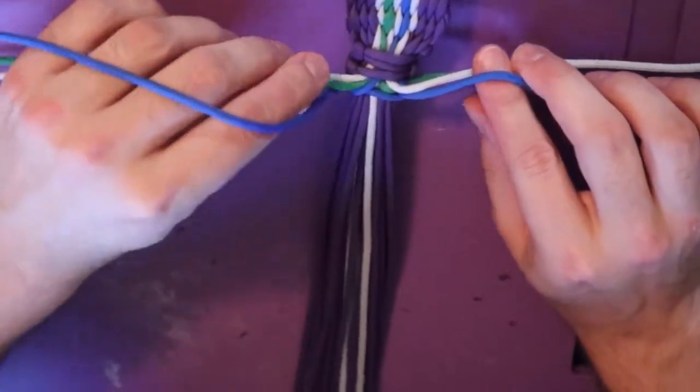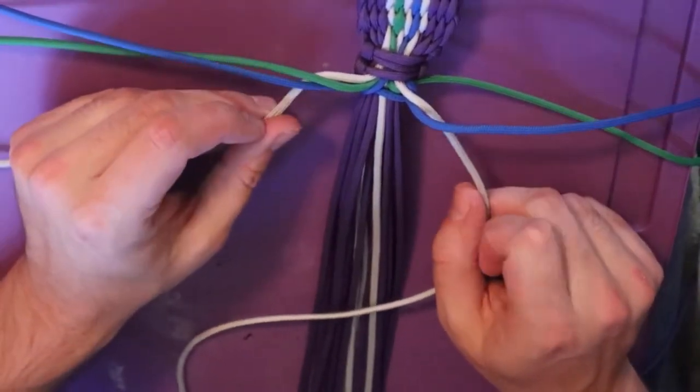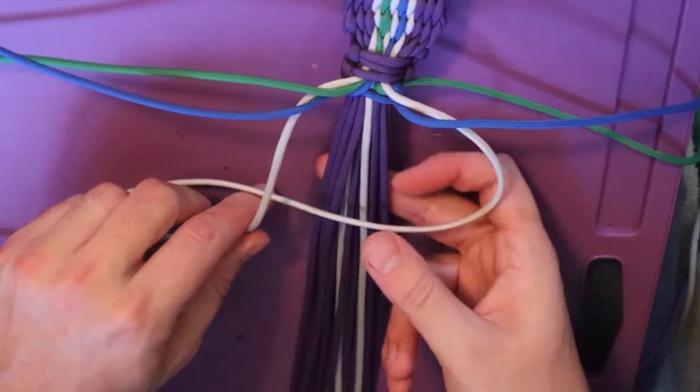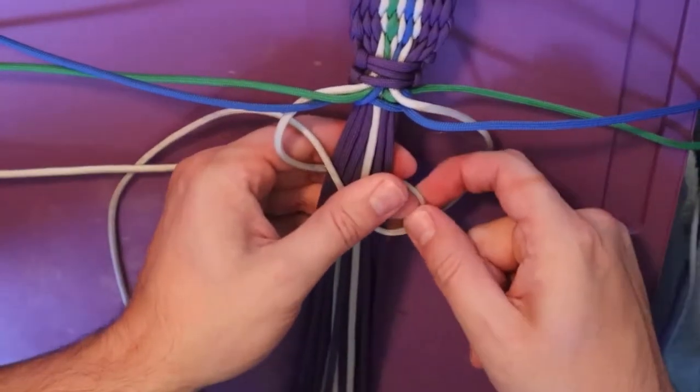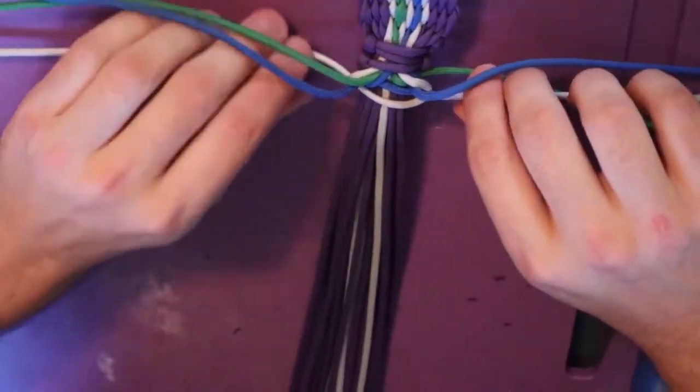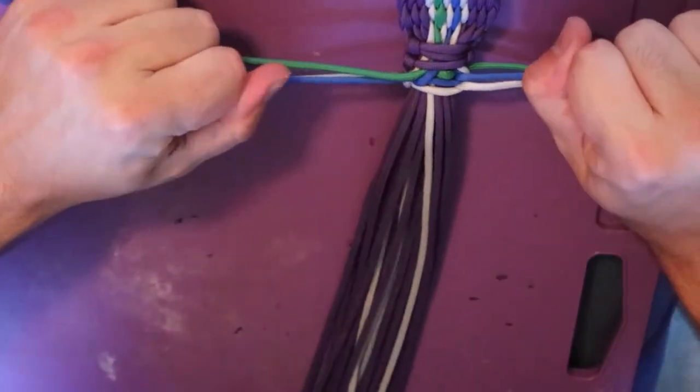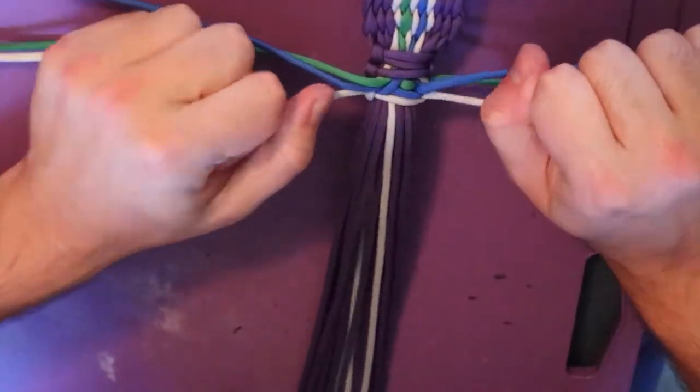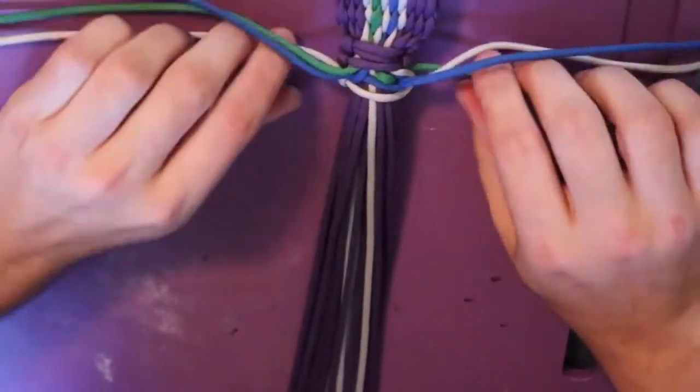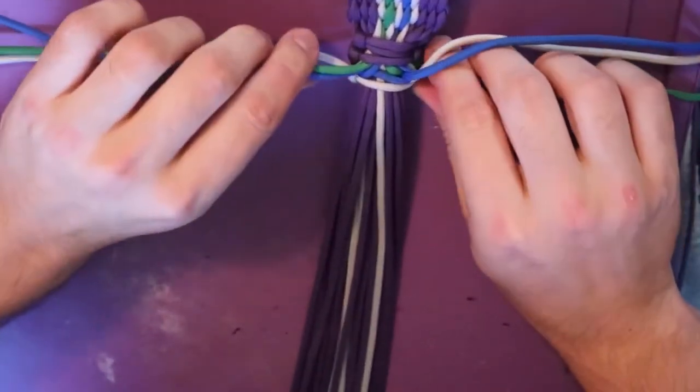So my right one went over. So my next color is going to be silver. So it goes underneath the blue and we're going to do the same thing. Make the four, send the other side through, pull it tight. And then I go back in and pull tight the one that I just did before it.